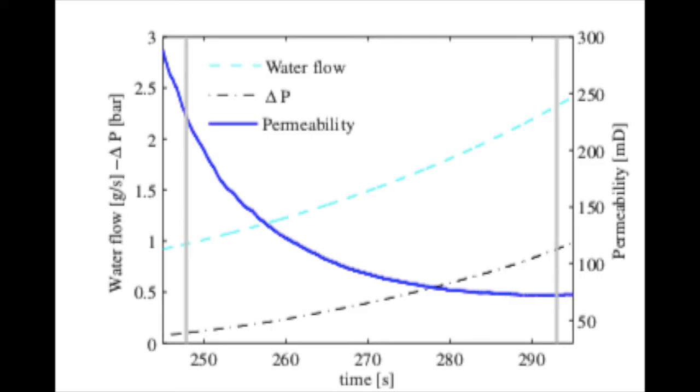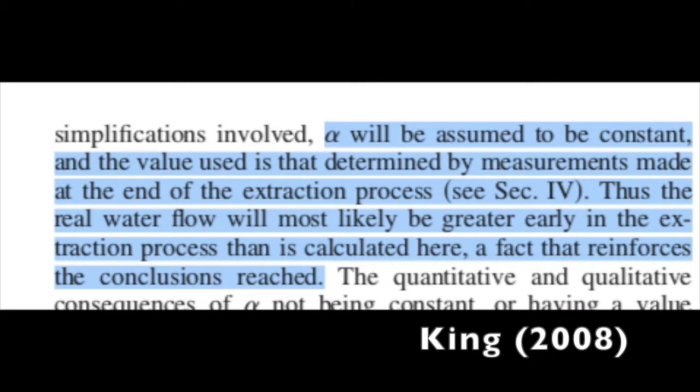Because they have actual pressure and volume flow measurements, Navarini's lab was able to plug straight into Darcy's law and measure the permeability, which drops dramatically with time, in general agreement with King's assumption that the real permeability will only decrease with time and only strengthen the conclusions King has reached by assuming it to be constant.